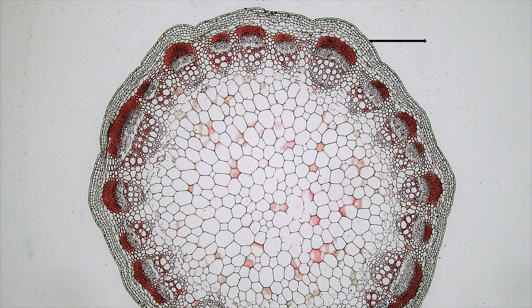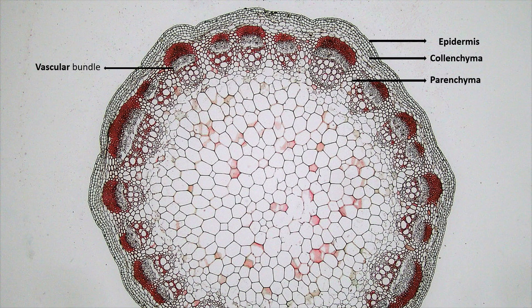The different types of tissues observed in the section of the stem include epidermis, collenchyma, parenchyma, and vascular bundles, which contain phloem and xylem. We all know that xylem transports water and phloem transports food material.